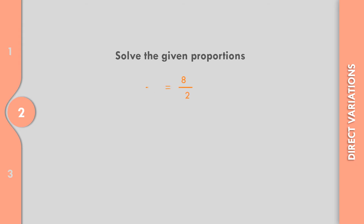How about number 2? x over 3 is equal to 8 over 2. Let us multiply both sides with 6, because 3 and then 2, so 6. 6 divided by 3, that is equal to 2. So it means 2 times x, that is 2x. 6 divided by 2, that is 3. So 8 times 3, that is equal to 24.